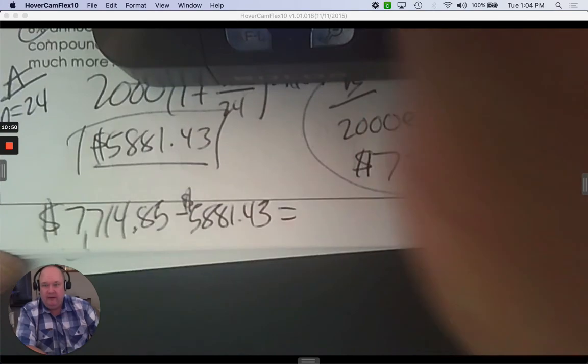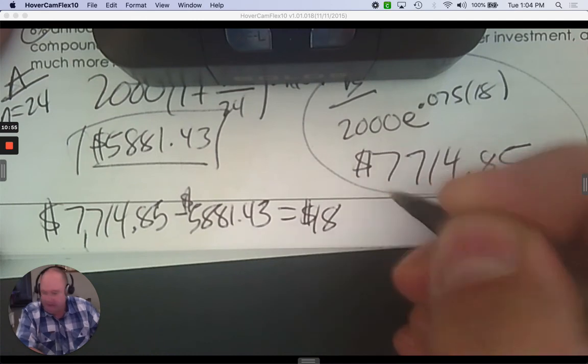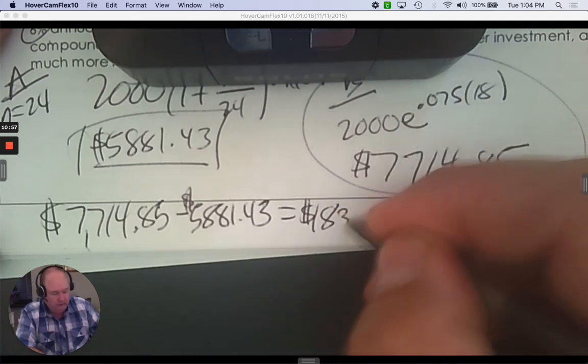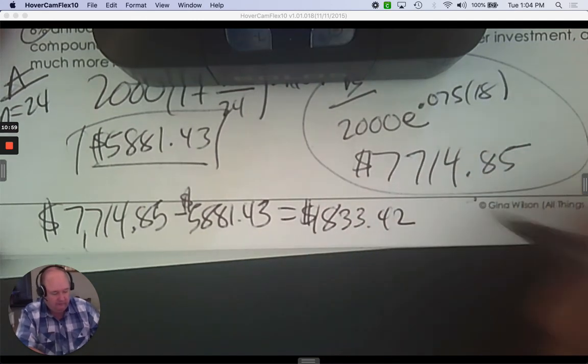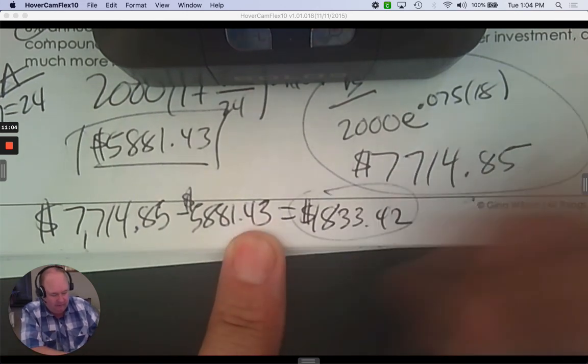So take your calculator and subtract the two options. And you get $1,833.42.